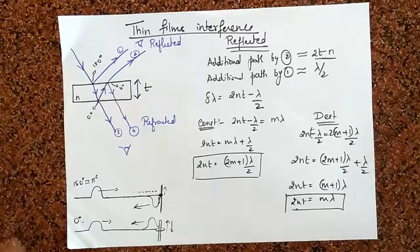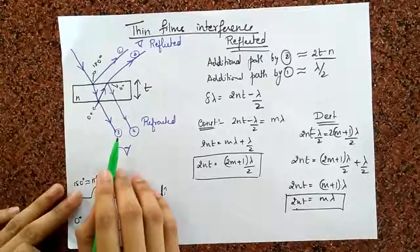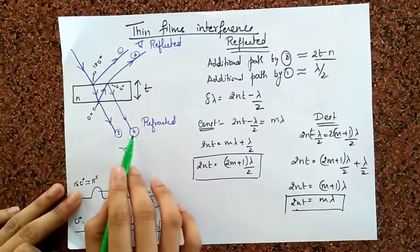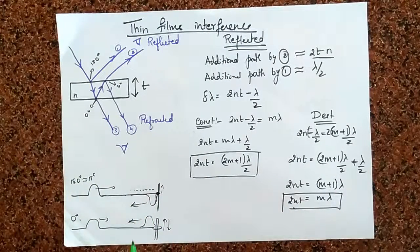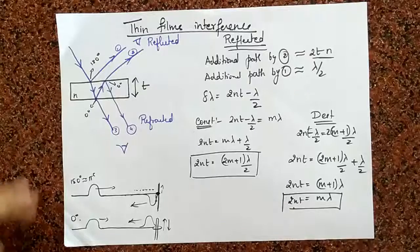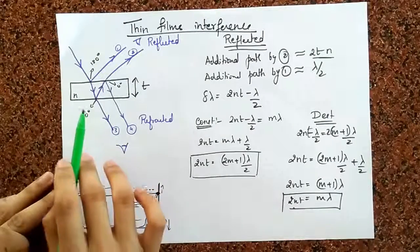Now, let's look at the thin film interference in the refracted case. We will be interested in looking at the third and fourth rays of light, what happens when they meet each other. Once you understand the reflected case, the refracted case is quite easy. All we have to think about is the path difference.